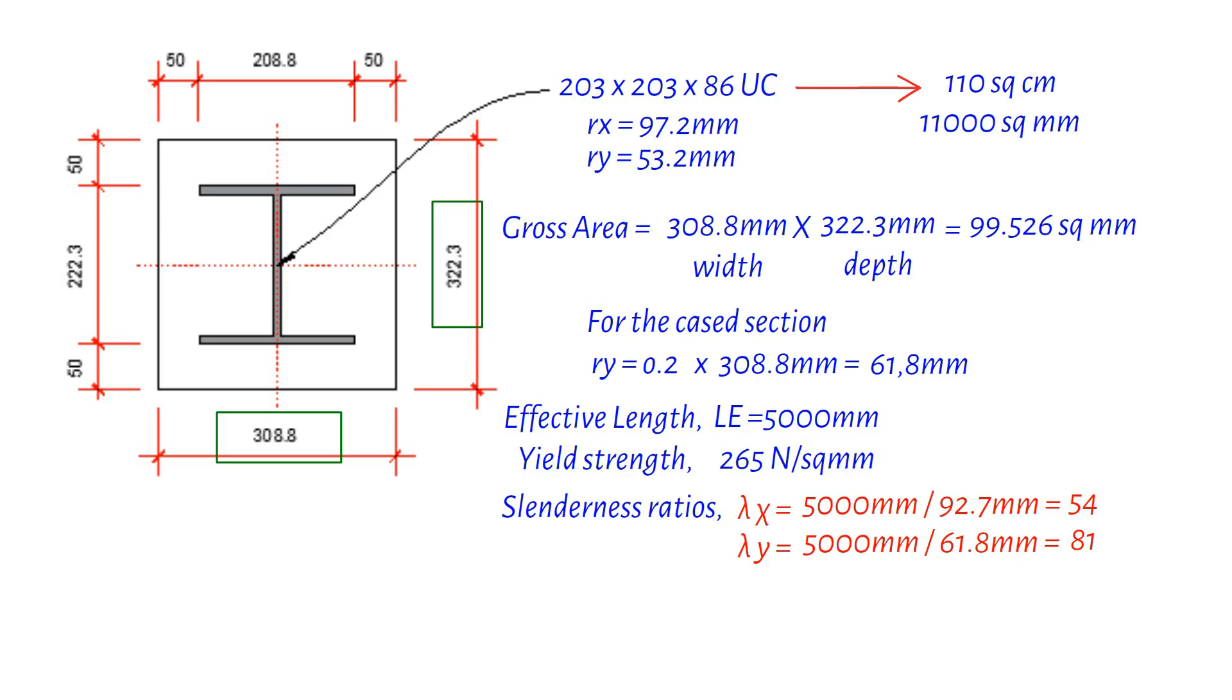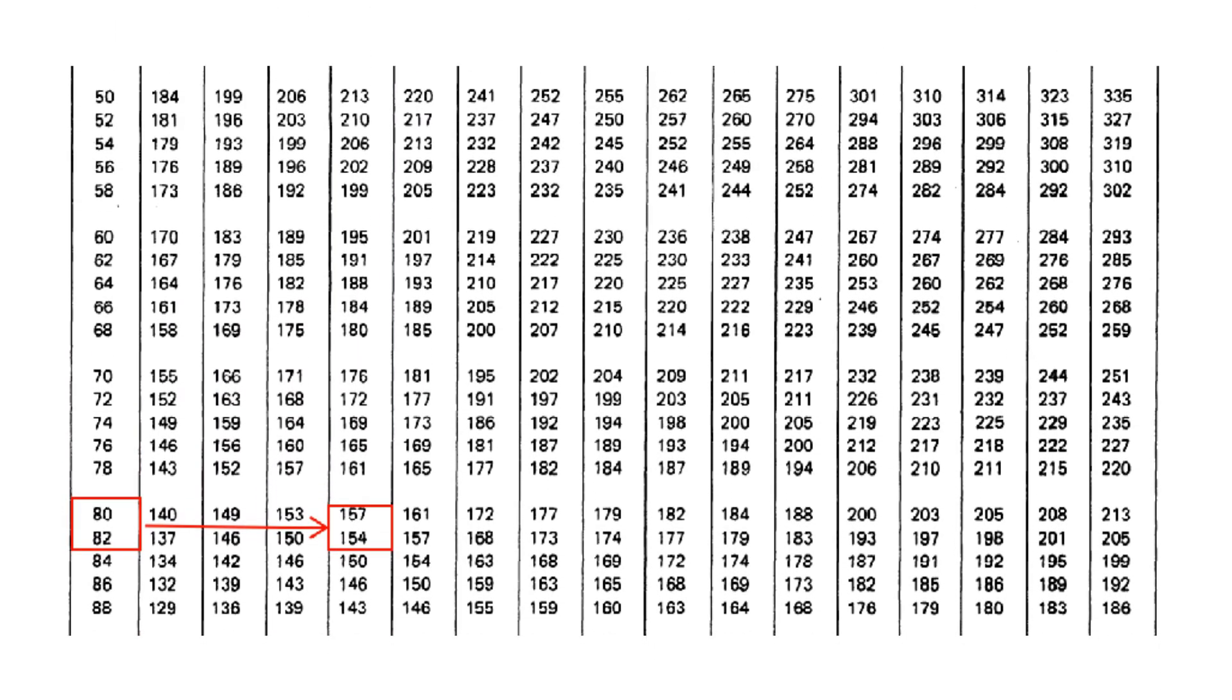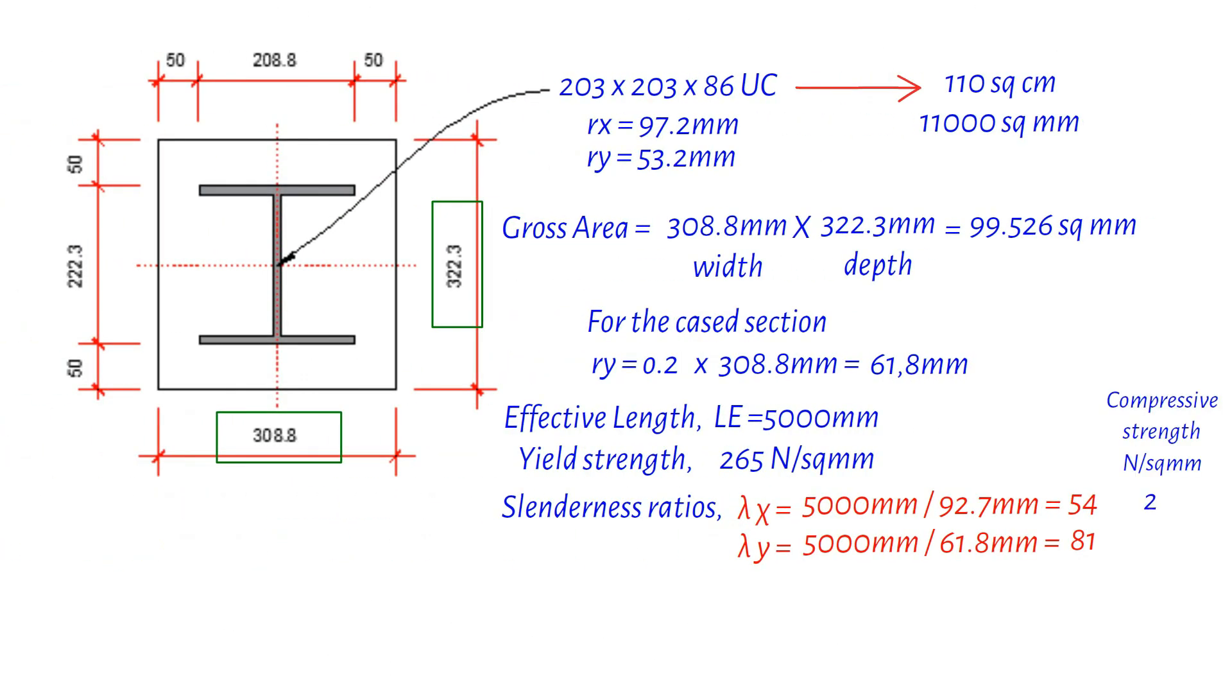From table 27b and 27c, we find the compressive strength of steel to be 223 newton per square millimeters for lambda-x and 155 newton per square millimeters for lambda-y. We go with the lower value here, 155 newton per square millimeters. But why do you think we choose the lower value?